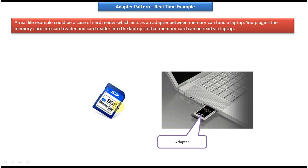What you have to do is put this memory card inside the card reader, then push the card reader into the laptop. Then using the laptop you can read the memory card and copy photos from the memory card and store them in your laptop. Then you can watch those photos in your laptop. So here the card reader is acting as an adapter. Without the card reader we cannot read the photos from the memory card because the memory card and laptop are incompatible interfaces. So to make these two incompatible interfaces work together, we are using the card reader.